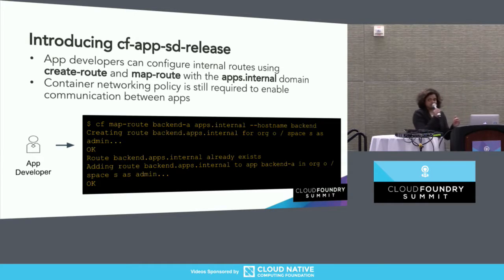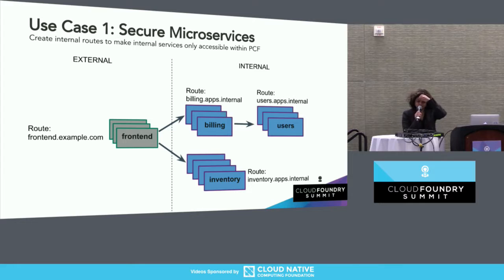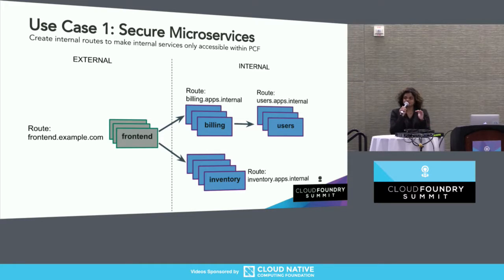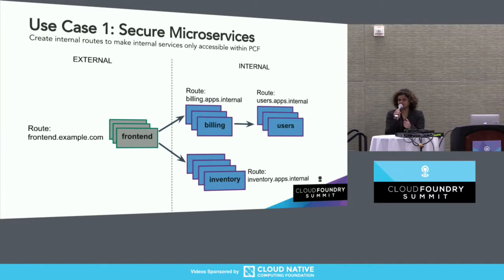Angela is going to do a demo showing exactly how this works. Let's just go through a couple of use cases. The first and most common use case is for secure microservices: your front-end microservice has an external route, but everything else is an internal route with C2C policy controlling what can talk to what, and that traffic never leaves your foundation — it stays within Cloud Foundry.